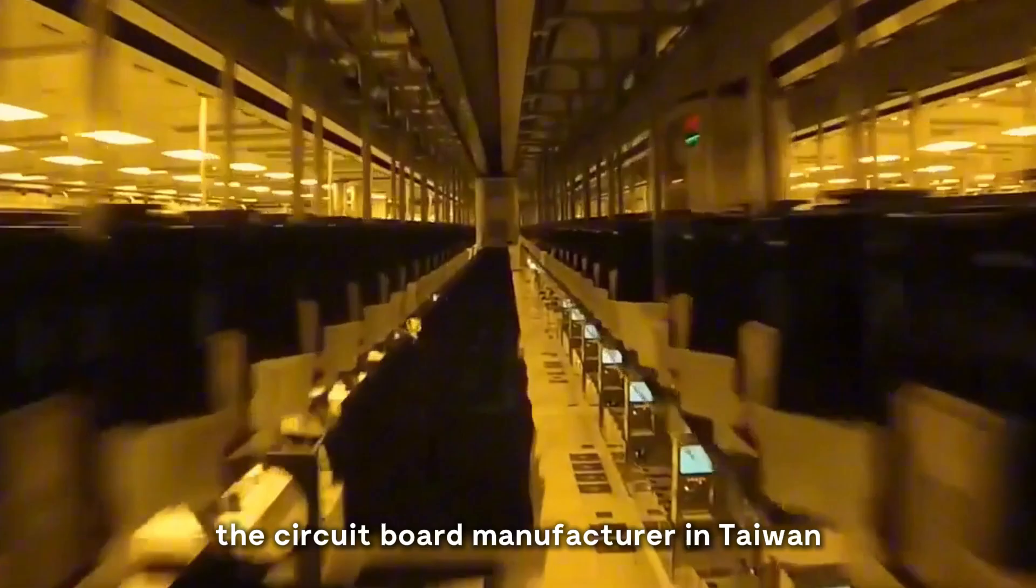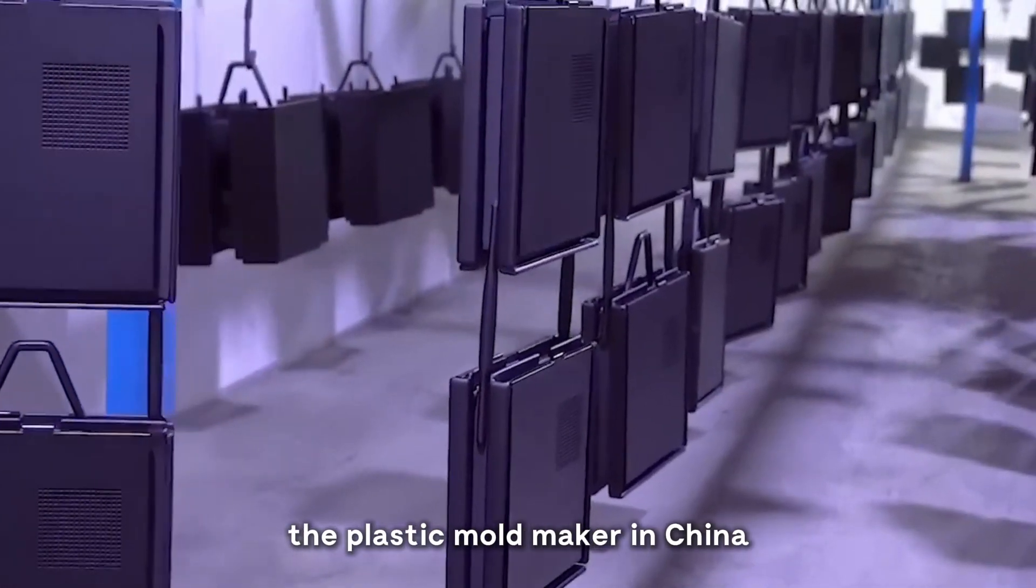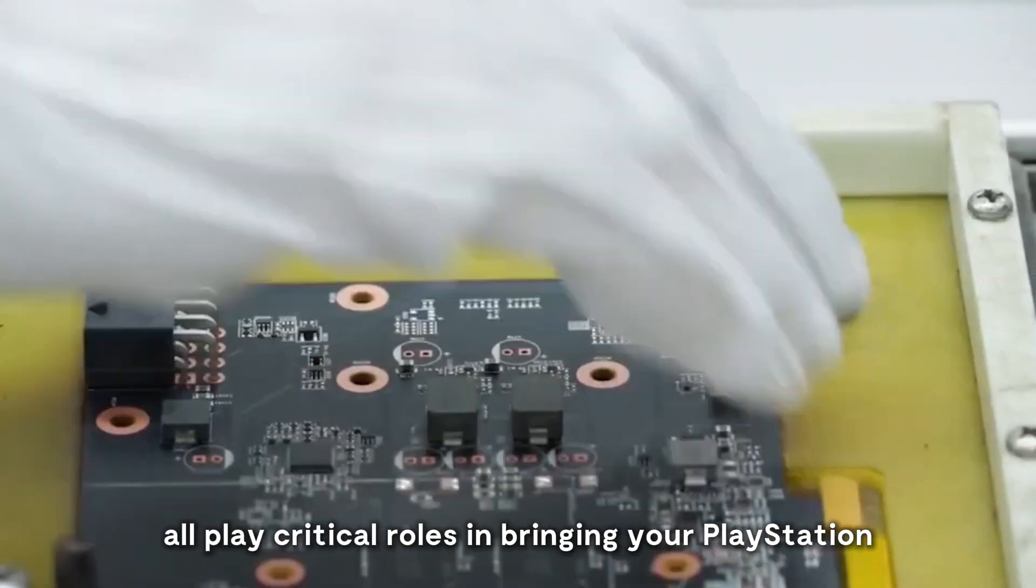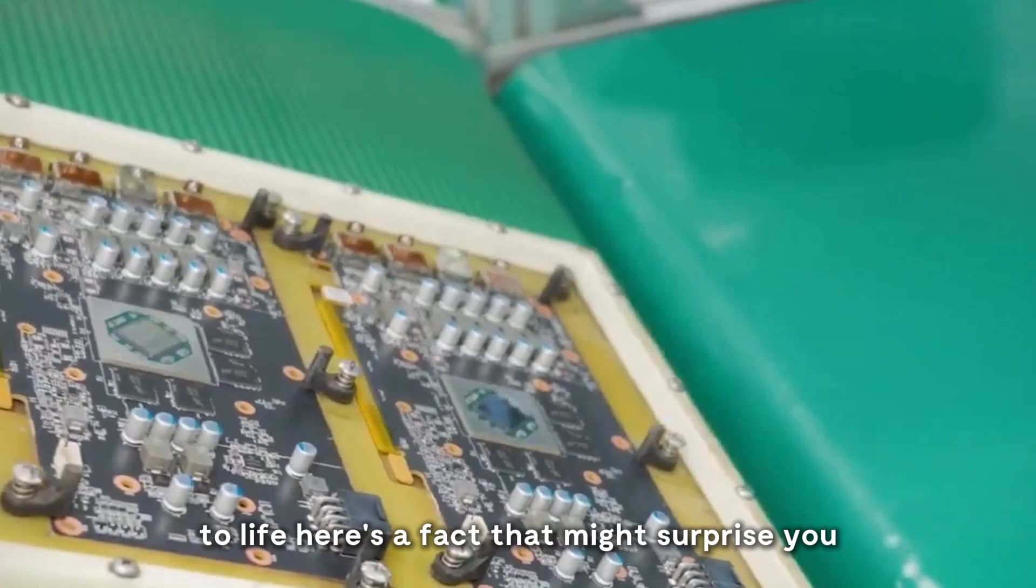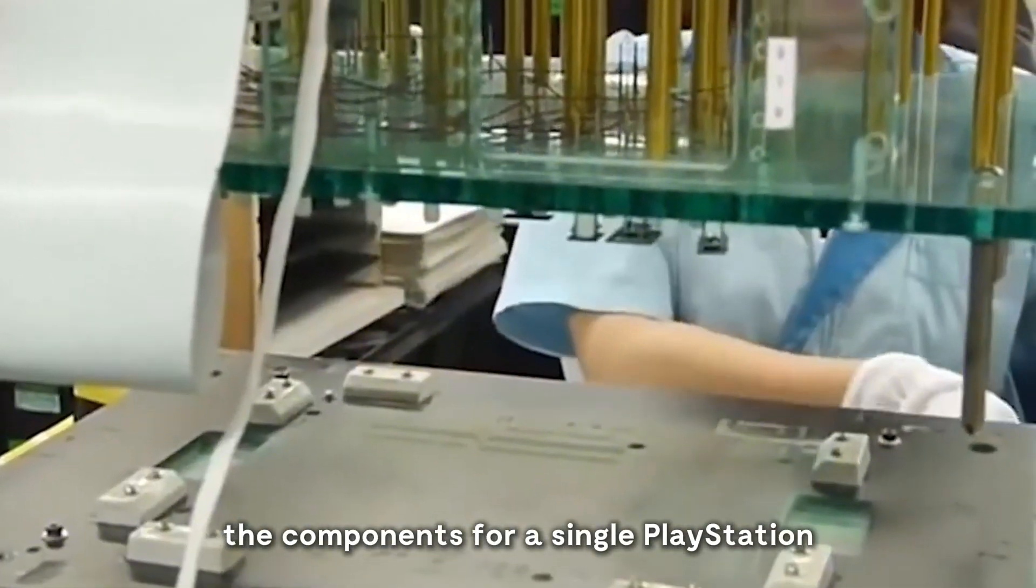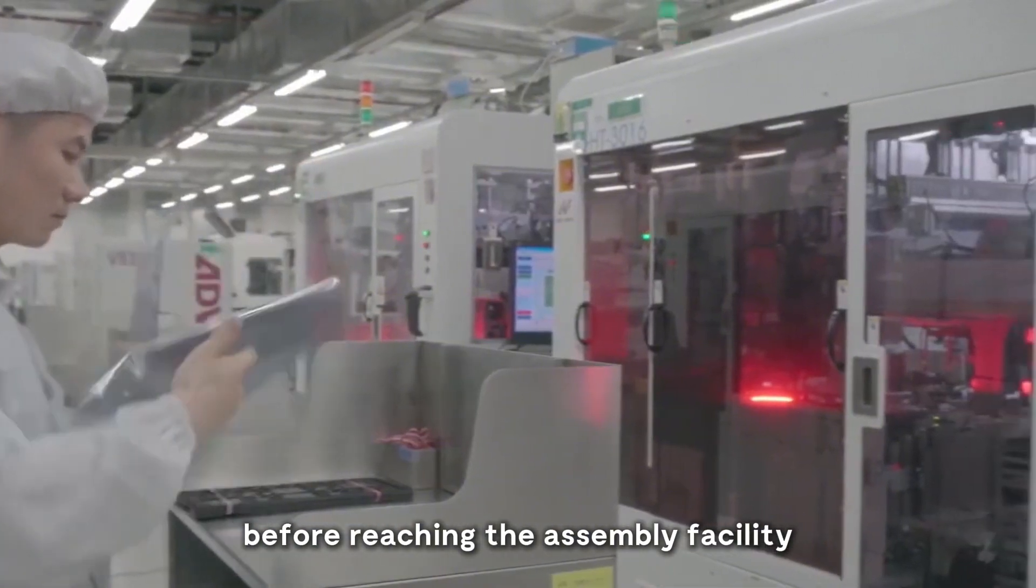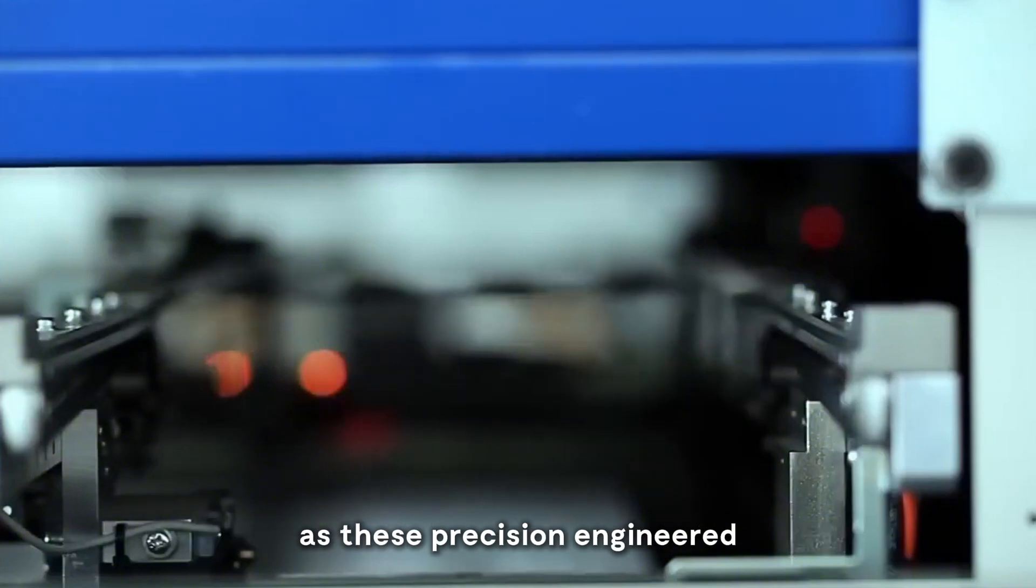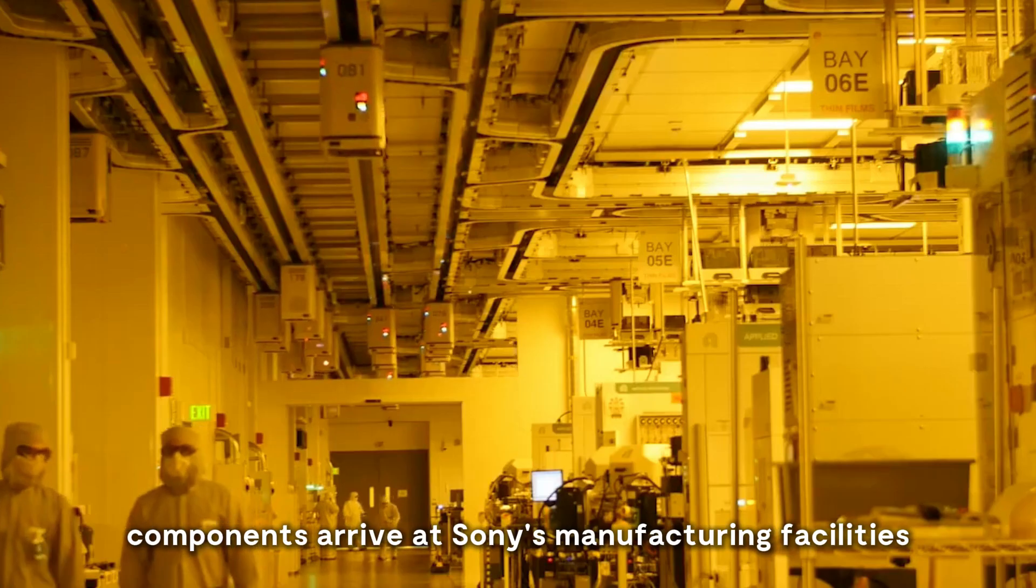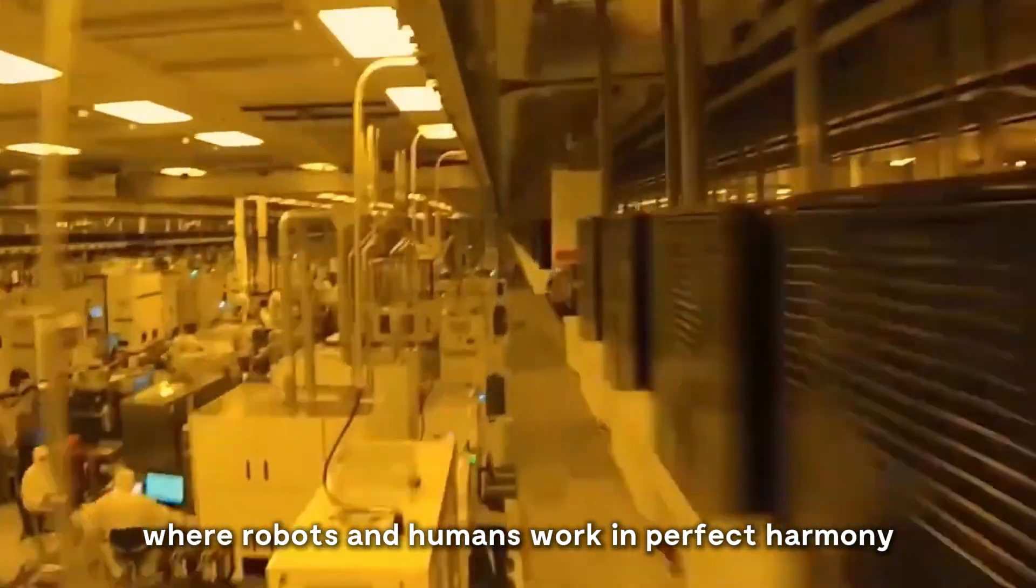The circuit board manufacturer in Taiwan, the memory chip producer in South Korea, the plastic mold maker in China all play critical roles in bringing your PlayStation to life. Here's a fact that might surprise you. The components for a single PlayStation travel an average of 70,000 miles collectively before reaching the assembly facility. That's almost three times around the earth. As these precision-engineered components arrive at Sony's manufacturing facilities, they're about to enter a world where robots and humans work in perfect harmony to bring them together.